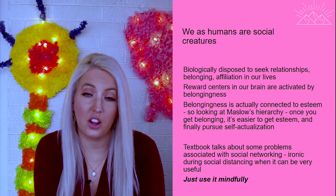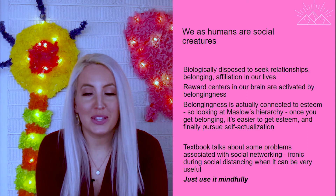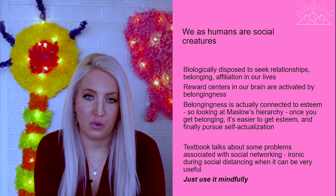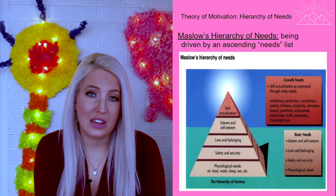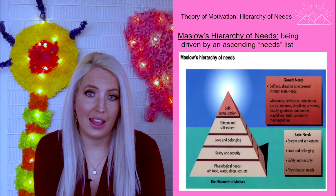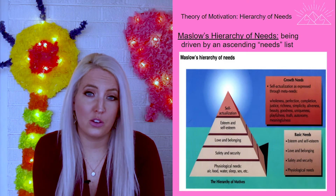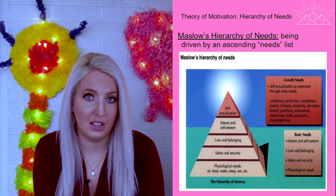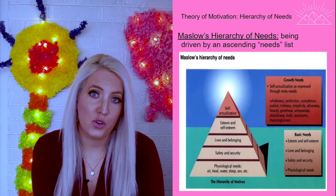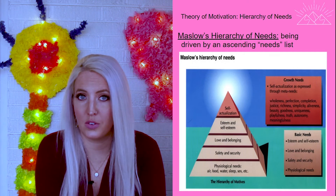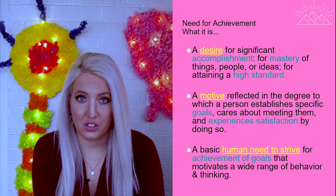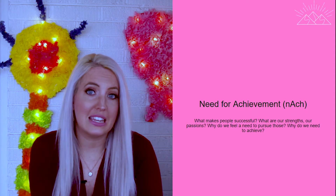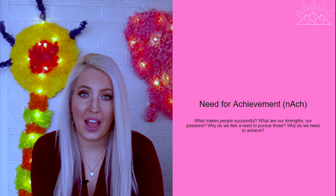Let's quickly recap Maslow's hierarchy of needs, because it is something we've looked at before. Maslow believed that we need to reach each level of his hierarchy triangle before we can reach self-actualization, and that self-actualization is the ultimate goal. Different psychologists refer to this final goal in different phrases — some use self-actualization, some use 'fully functioning person,' and some use 'need for achievement.'